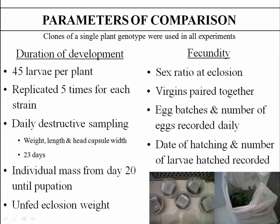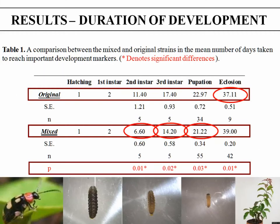We identified two areas of life history to compare: the duration of development and the fecundity of the two strains. We placed a number of larvae onto plants and sampled each day by removing larvae, taking their weights, length, and head capsule measurements. From day 20 up until pupation we tracked individual weights through to eclosion as adults. For fecundity we obtained sex ratios and paired virgin males and females to get data on egg batches per female, eggs per batch, and larvae hatching.